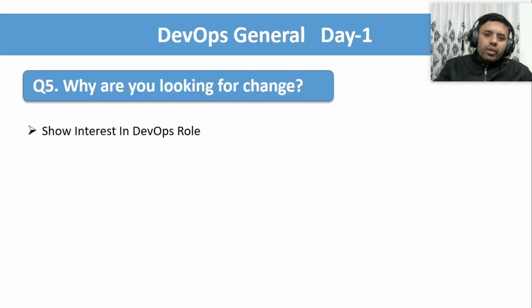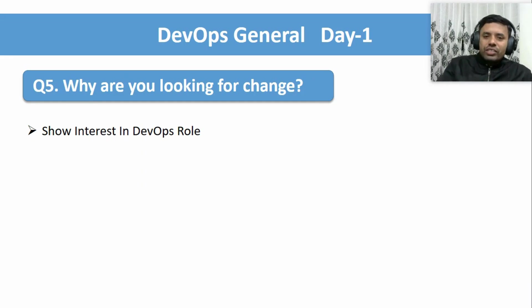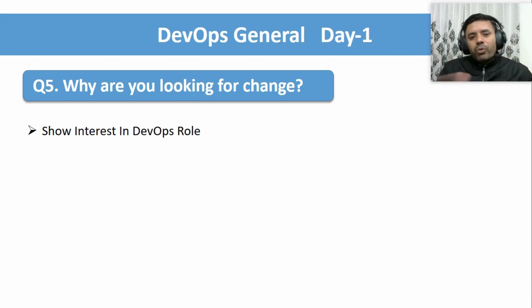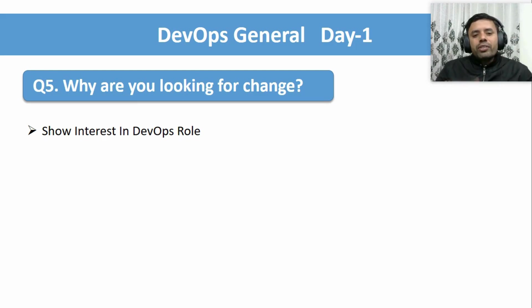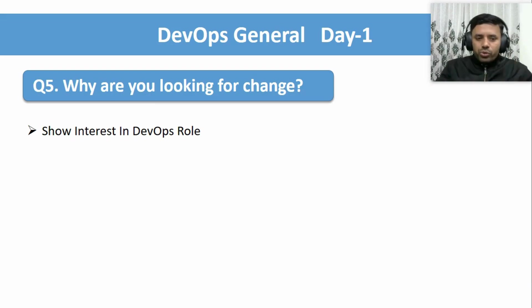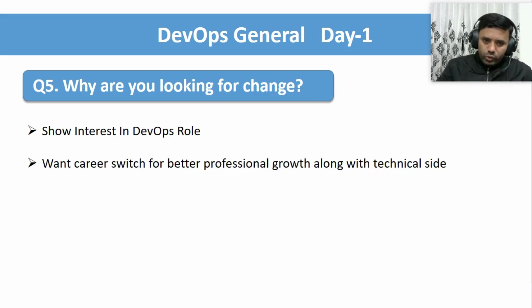The last question for today's session is: 'Why are you looking for a change?' This might be an HR-type question, but you could also get it from the interview panel. To answer this, you should show your genuine interest in the DevOps role, cloud engineer role, or whatever position you're applying for. Showcase how interested you are in this position.